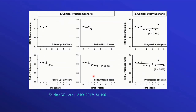If you have a patient tested three times, this gives one regression line. If you add a fourth test, the regression line changes. Each additional examination produces a slightly different regression line — shifting a little down or up each time.